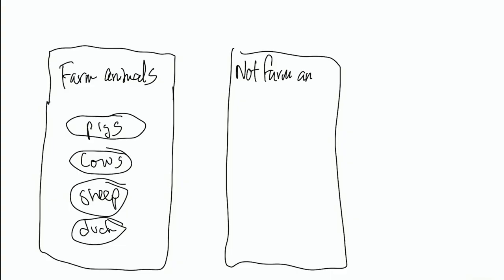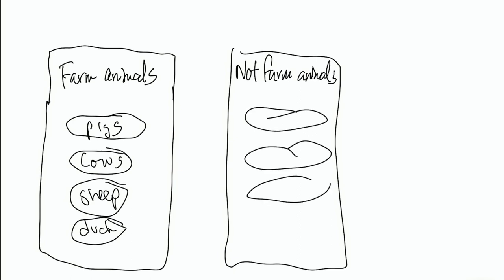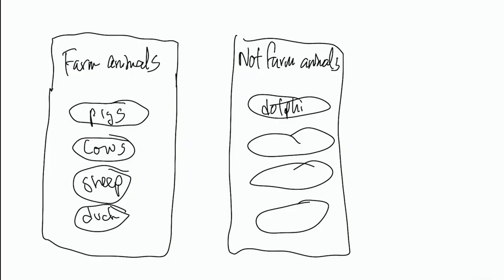Now we want to think about that alternative other list, which is essentially going to be not farm animals. And as we list the not-farm-animals, what you're going to understand — especially for kids — is what makes a farm animal a farm animal and what's not a farm animal. So what are some not farm animals? My favorite example from this young child was dolphin — dolphins, which is not a farm animal.